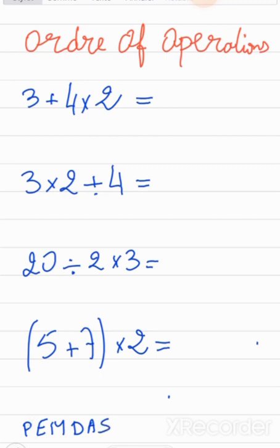The P stands for parenthesis. British call it brackets and use B instead of P. The E is for exponent. The M stands for multiplication, the D for division, A for addition, and S for subtraction.